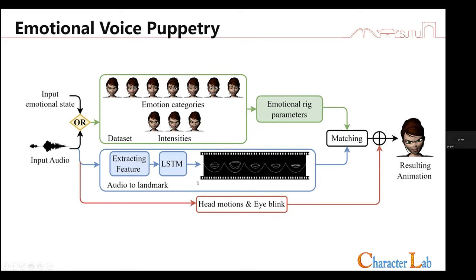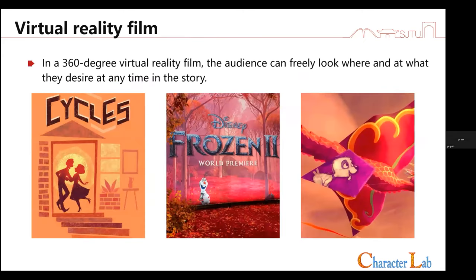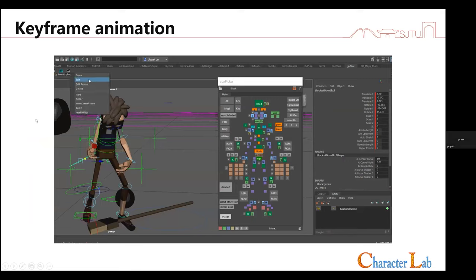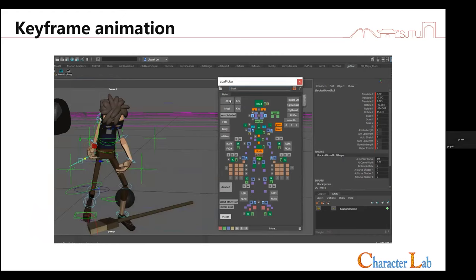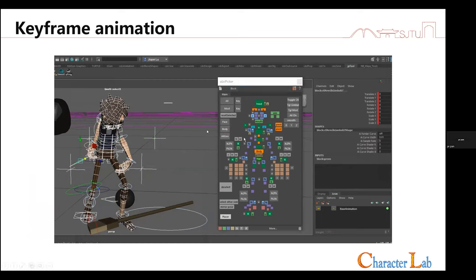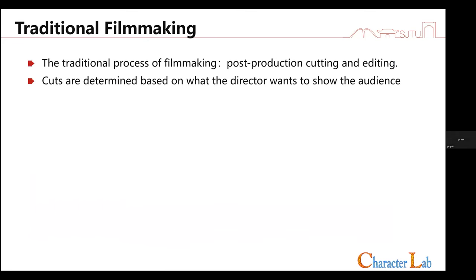We've now introduced two methods: optimizing motion capture and using machine learning to create animation. Now I'll talk about creating virtual reality film using keyframe animation — the third type. There are three types of animation pipelines: motion capture, completely machine learning, and keyframe. This work is actually being used in the Coco and Frozen 2 filmmaking systems. The traditional way to create animation is very difficult — people have to rotate characters to ensure the correct angle in Maya using a mouse and desktop interface.